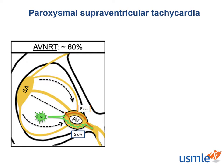Additionally, by the time the impulse has reached the distal end of the slow pathway, the fast pathway is excitable again and can receive the impulse and transmit it back in the retrograde direction up to the atria. The fast pathway can transmit this impulse to the atria, but also back to the slow pathway, creating a reentry circuit within the AV node. If an impulse gets trapped in this circuit, it can continuously depolarize the ventricles far too frequently, resulting in a very rapid heart rate.